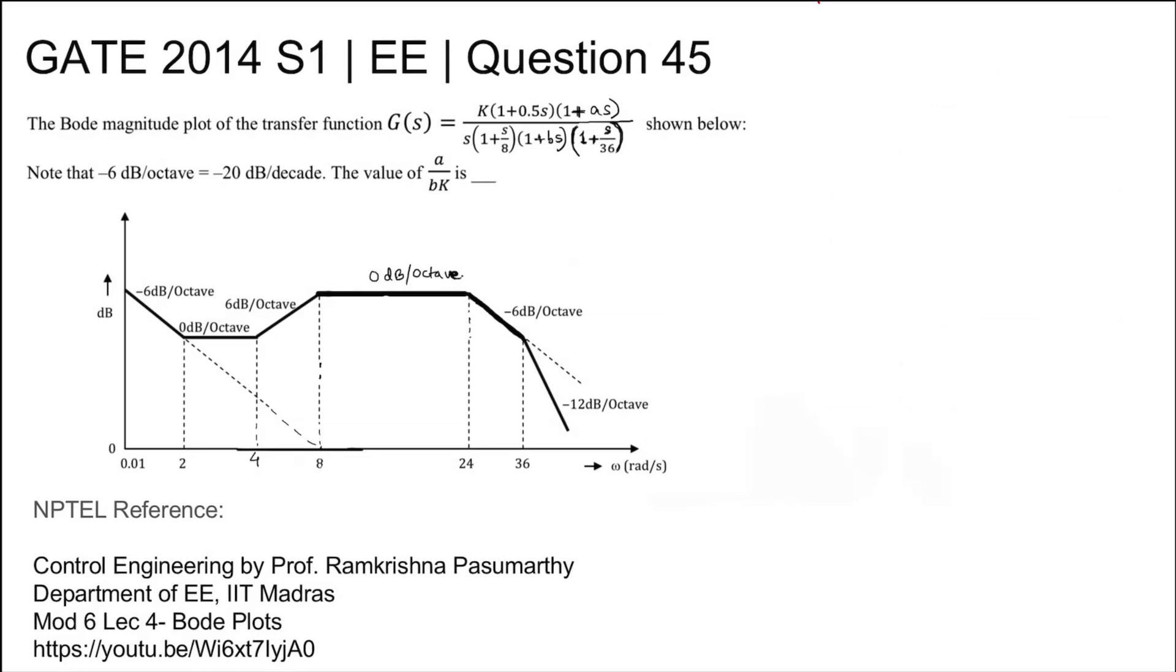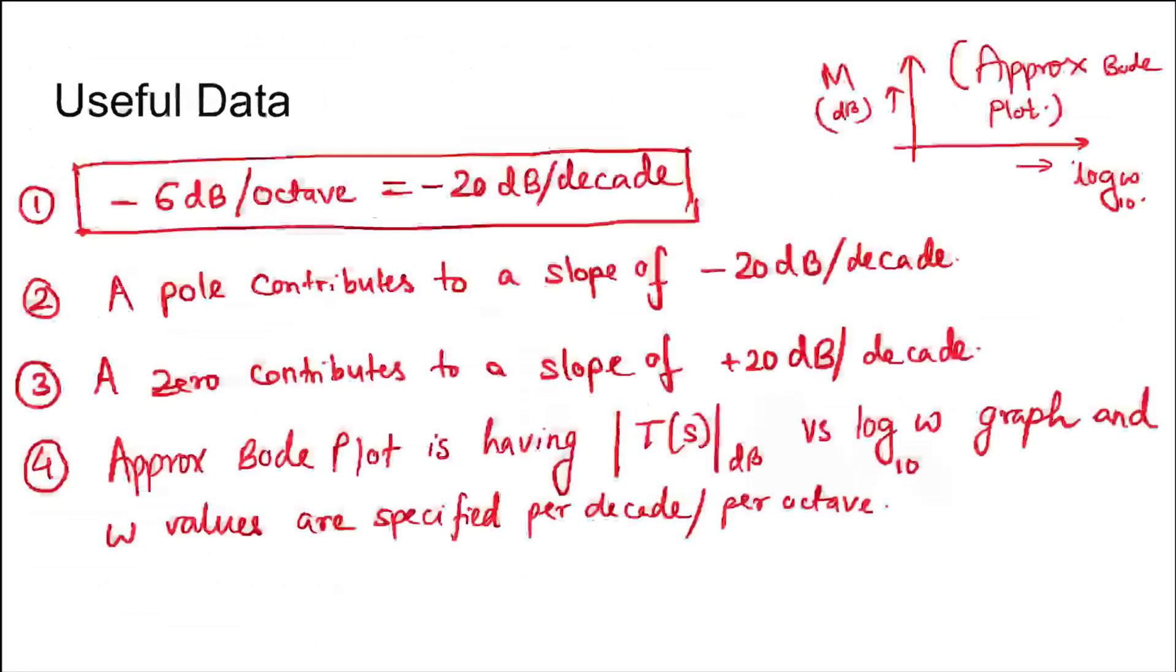Of the NPTEL course Control Engineering by Professor Ramakrishna Pasumarthy, Department of Electrical Engineering, IIT Madras. For useful data, you need to know that -6 dB per octave equals -20 dB per decade.